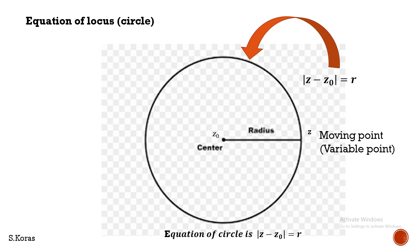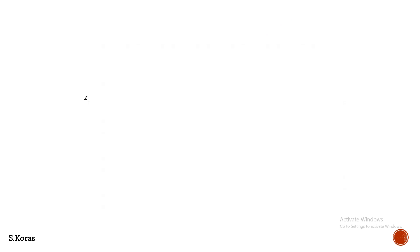Using this equation, we are going to discuss about points which are inside the circle, outside the circle, and on the circle. Let us consider two points Z₁ and Z₂. The distance between these two points is nothing but modulus of Z₁ minus Z₂.